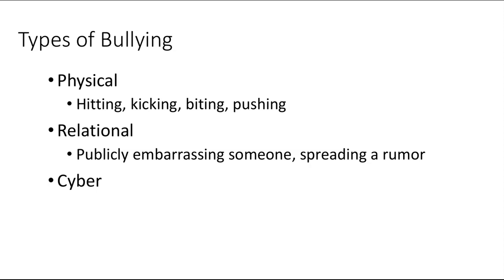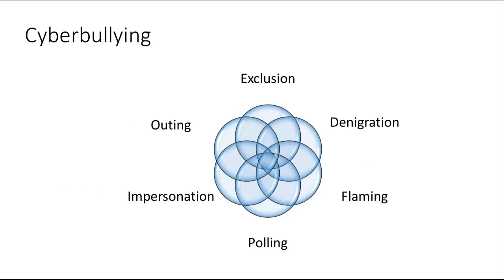In terms of types of bullying, we know there's the physical, the relational, and now incidences of cyber bullying. Physical is pretty easy to identify — we're talking about physical altercations, hitting, kicking, biting, pushing. Relational is a lot of the social-emotional: public embarrassment, spreading rumors, talking negatively about others. Cyber bullying is a dangerous component we're seeing as our society moves increasingly online. A lot of students are bringing devices into the building and hiding them. We are engaged in social media and network communications, so cyber bullying can occur pretty quickly.